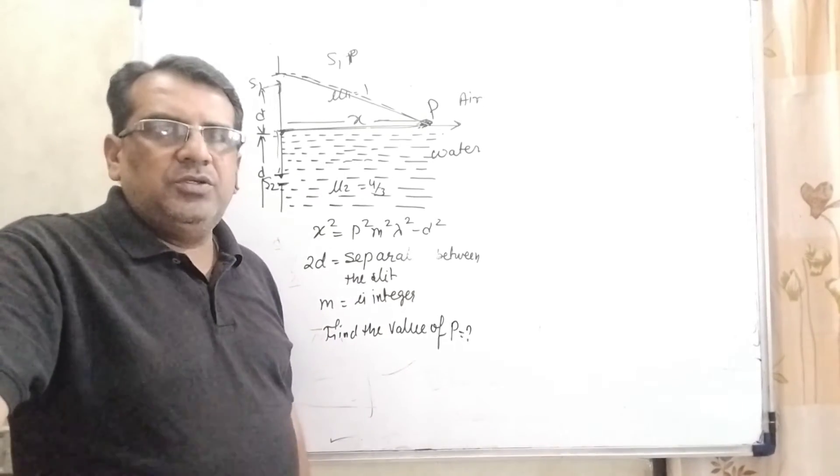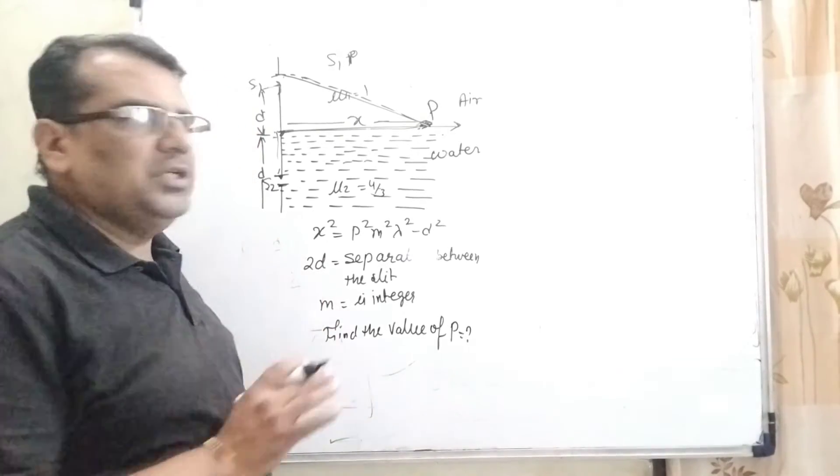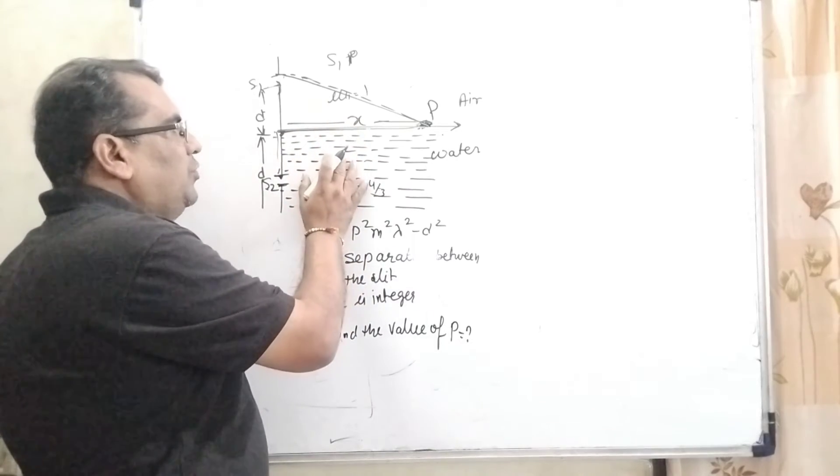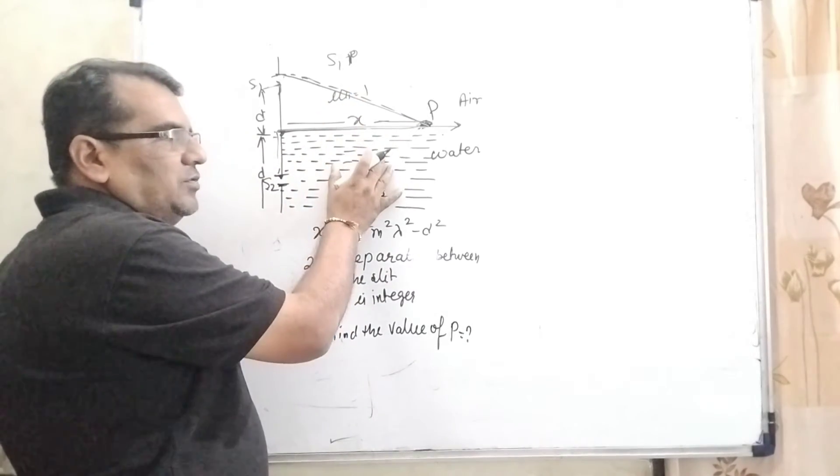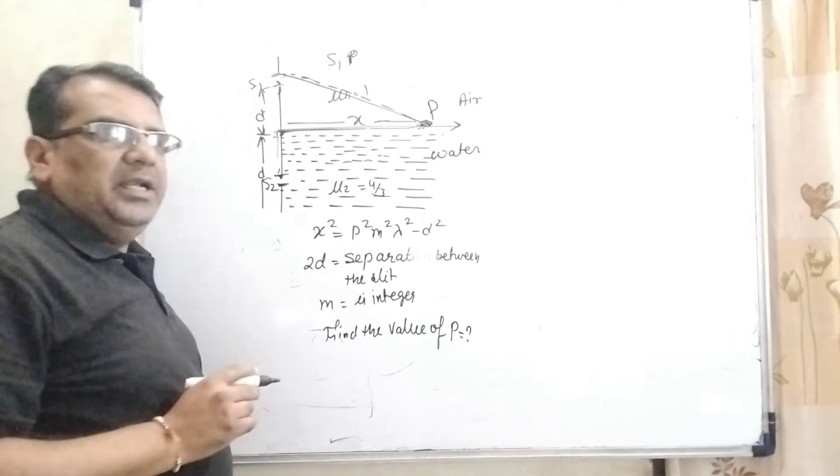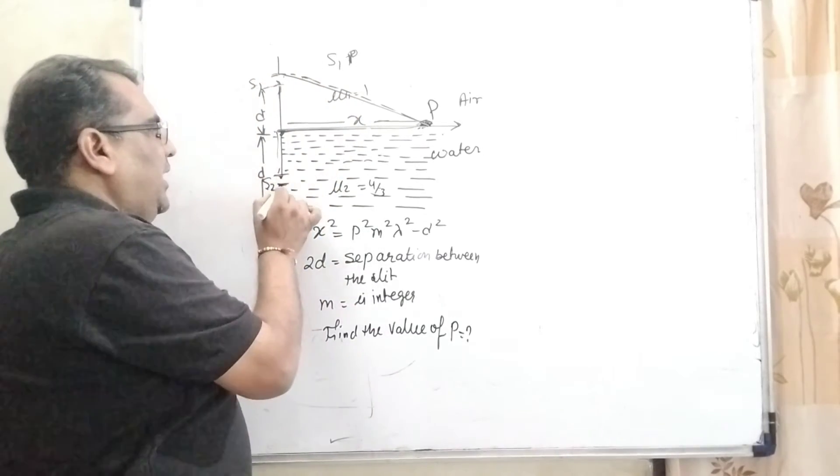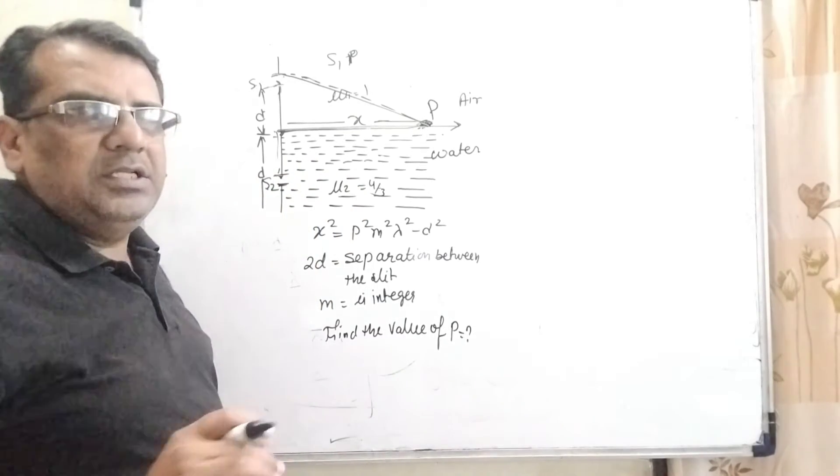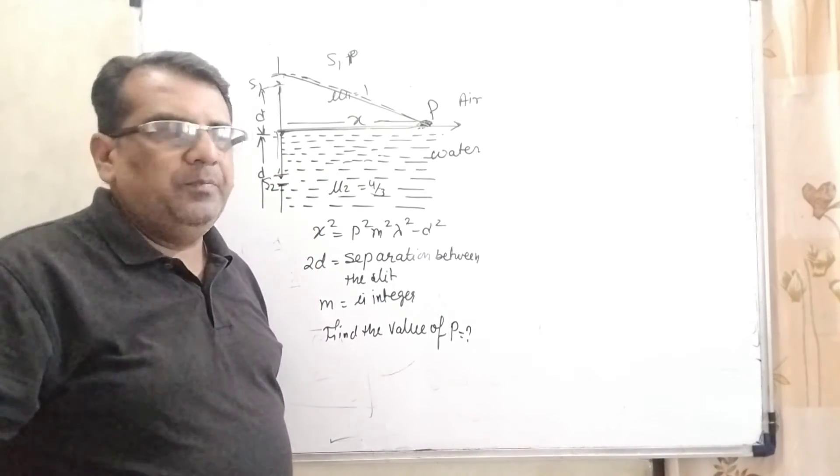This question is based on Young's double slit experiment, but here there's a little change. What is the change? Here we have two mediums: first air and second water. Slit S1 is present in air, slit S2 is present in water. So obviously, the distance traveled in different mediums will be different.